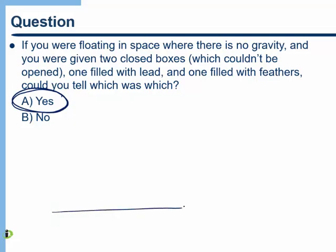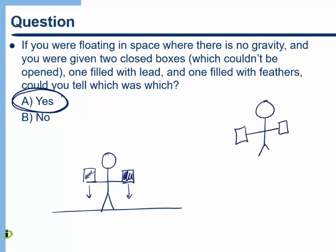It turns out the answer is yes, you can tell, but obviously you can't tell in the way we would normally tell. When we're standing here on earth, if I simply took the box with lead in it and gave it to you in one hand and I gave you the box with the feathers in the other hand, it'd be very easy to tell which one was heavier because obviously the lead is much heavier than the feathers. But if we don't have gravity pulling down on the objects, so here we are now in space, what could we do?